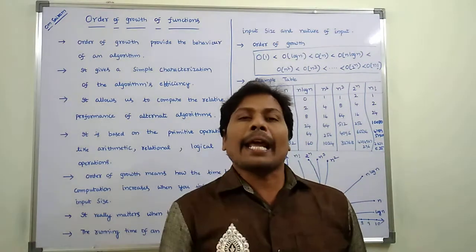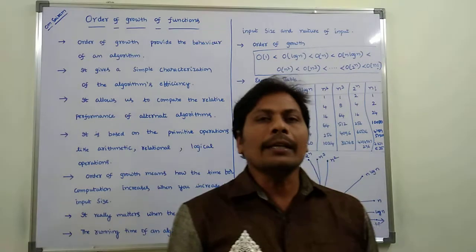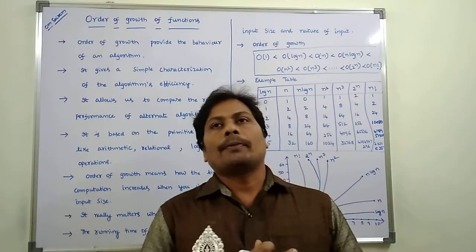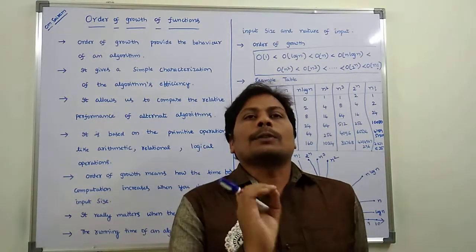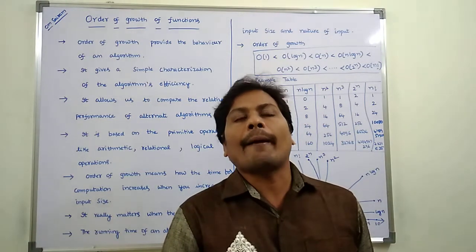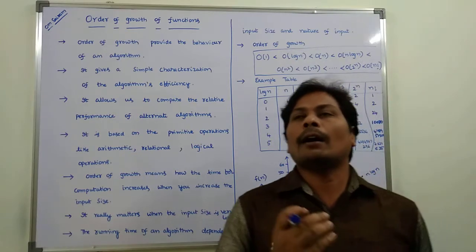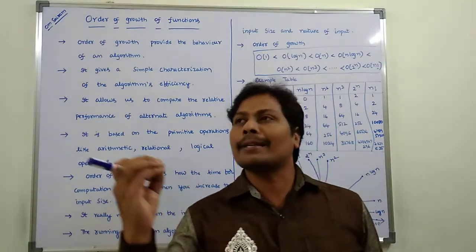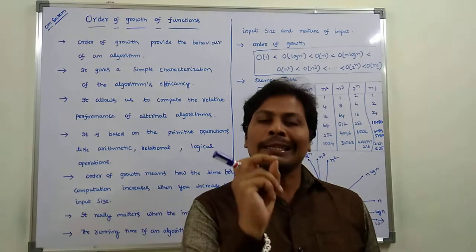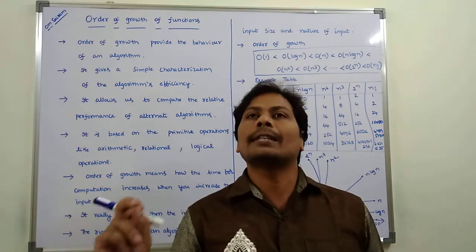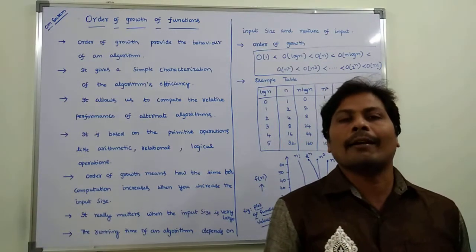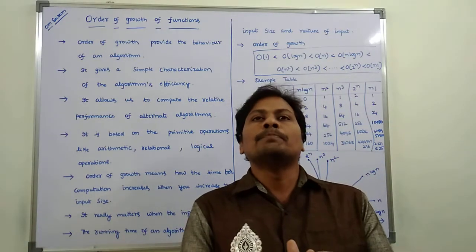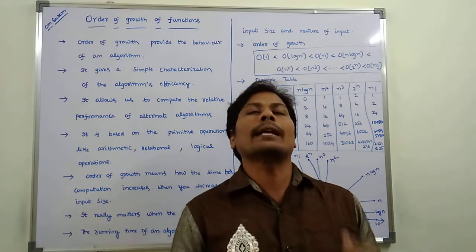The running time of an algorithm mainly depends on input size and the nature of the input. Order of growth simply provides the behavior of an algorithm — whether the algorithm is fast, slow, or average. By using order of growth, we can identify whether an algorithm is the fastest, slowest, or average algorithm.